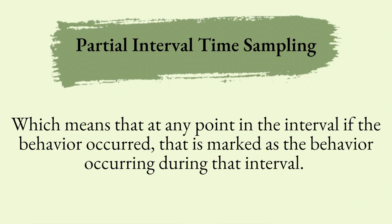So first let's go ahead and talk about partial interval time sampling, which means that at any point in the interval if the behavior occurs it's going to be marked as occurring within that interval. So if you have a five-minute interval, it doesn't matter if it happened at 1 minute 30 seconds or at 2 minutes 30 seconds — the point is that you're going to mark it as occurring.